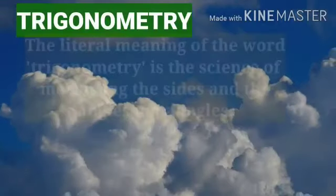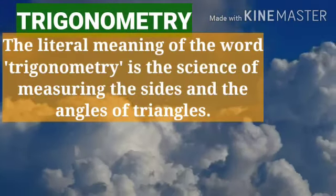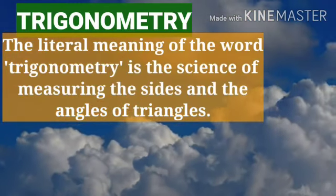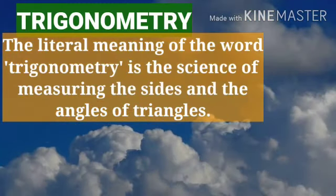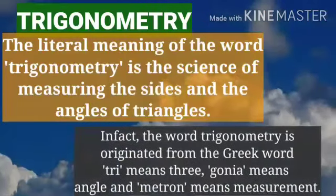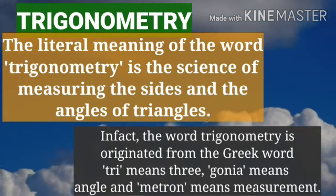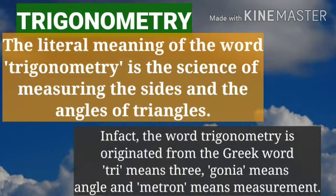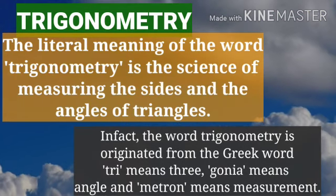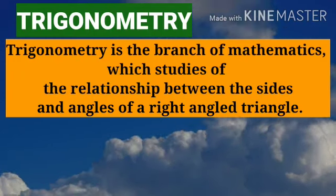First of all, let us understand the meaning of trigonometry. The literal meaning of the word trigonometry is the science of measuring the sides and the angles of triangles. In fact, the word trigonometry is originated from the Greek word 'tri' that means three, 'gonia' means angle, and 'metron' means measurement.